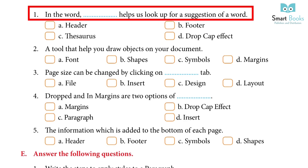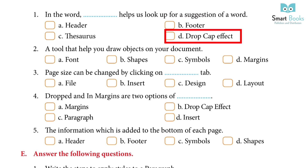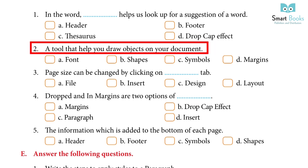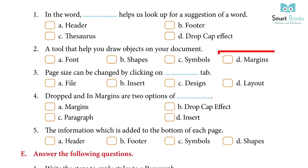Choose the correct answer: 1. In Word, — helps us look up a suggestion for a word. Options: Header, Footer, Thesaurus, Drop Cap Effect. Answer: Thesaurus. 2. A tool that helps you draw objects on your document. Options: Font, Shapes, Symbols, Margins. Answer: Shapes. 3. Page size can be changed by clicking on the — tab. Options: File, Insert, Design, Layout. Answer: Layout.